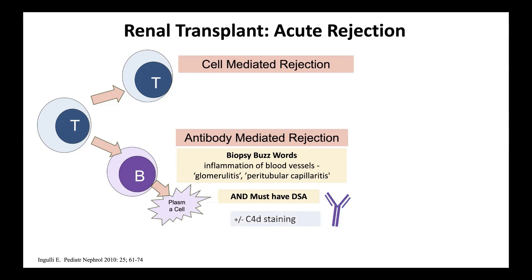Another thing you might see on biopsy is C4D staining. C4D is a part of the complement cascade that gets left behind — it's stimulated by antibodies. So if you see C4D on a biopsy, it's saying that complement was here, and it was probably called there by an antibody. You don't need C4D for the diagnosis, but when present it supports antibody-mediated rejection. You may also see thrombotic microangiopathy, which we'll return to shortly.